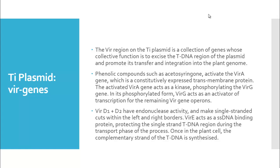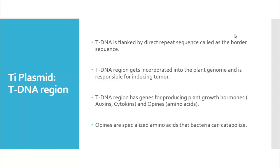These are the roles of the virulence region of the Ti plasmid. It is a cascade of events triggered by a signal from phenolic compounds, activating the vir genes one after another, causing the T-DNA region to be excised from the plasmid and transported into the plant genome. The T-DNA region is flanked by direct repeat sequences called border sequences, gets incorporated into the plant genome, and is responsible for inducing tumor.